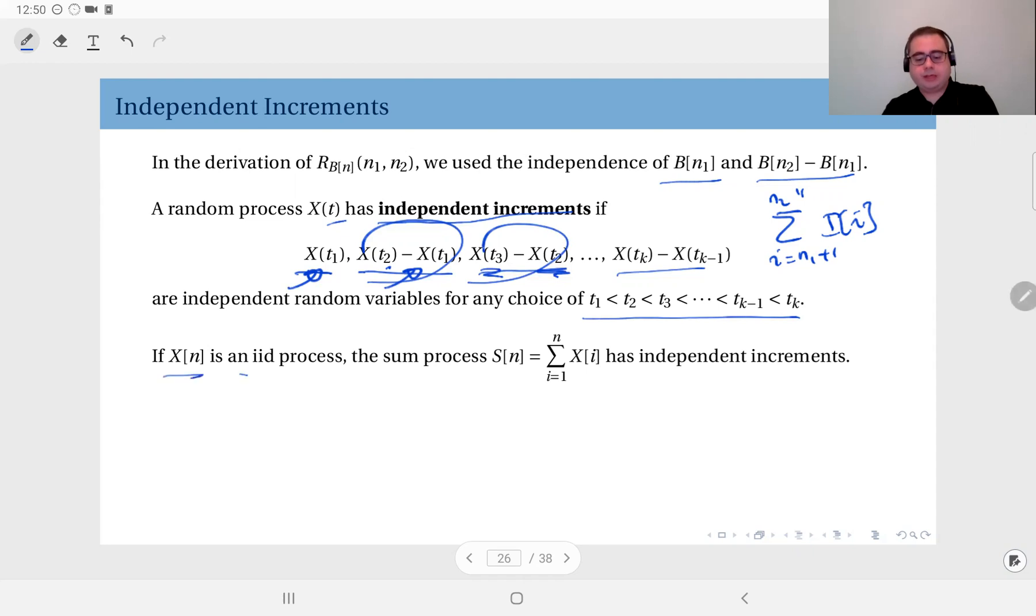If X(n) is an iid process, each time instant has independent distribution of the others, then the sum process associated with it will always have independent increments. This is a very important property which is very useful.